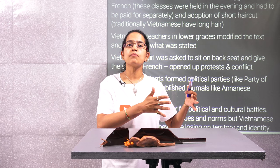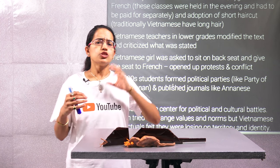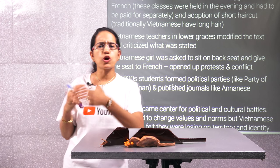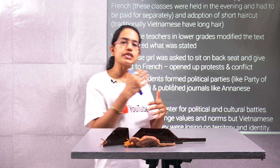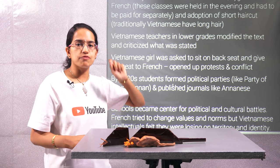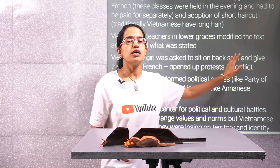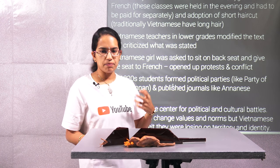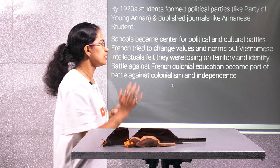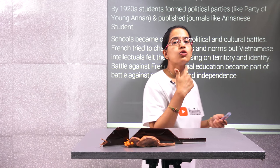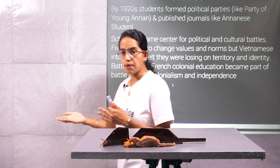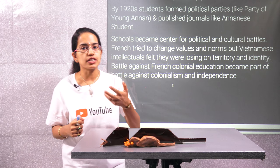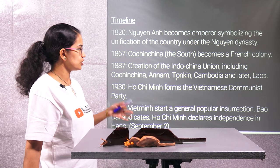Similarly, we can trace a parallel example with the untouchables or Dalits in India where B.R. Ambedkar led a revolution. When studying any concept, try to relate it across the globe — similar developments witnessed in one part of the world would appear in other parts as well. These developments led to revolution within the students, resulting in numerous political parties being founded — such as the Party of Young Annam, with journals published in the name of Annam students. Some students were looking to work against colonialism and started a Go East movement, under which students moved to Japan because Japan had achieved a victory over Russia and they felt they could replicate that within their own nation.